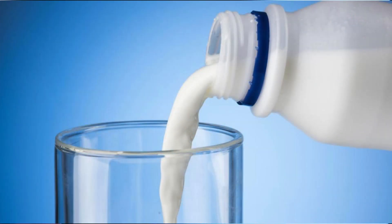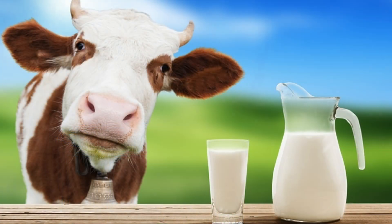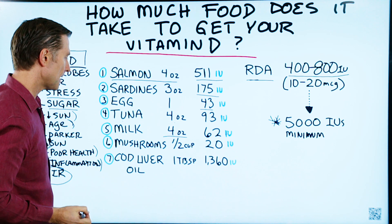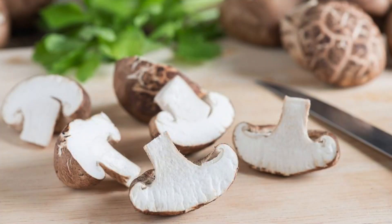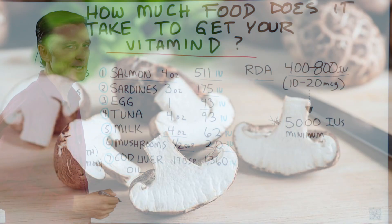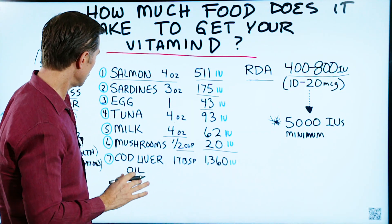Milk, which I'm not recommending, but milk, four ounces from a cow, has 62 IUs of vitamin D. Mushrooms, shiitake, one half cup, has 20 IUs of vitamin D. Not very much.